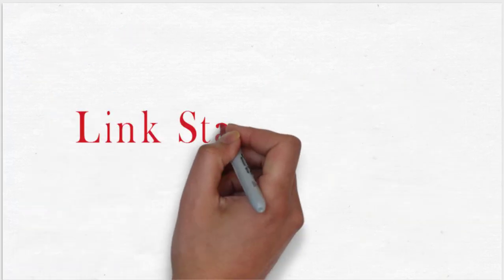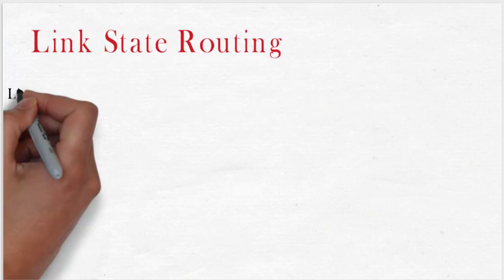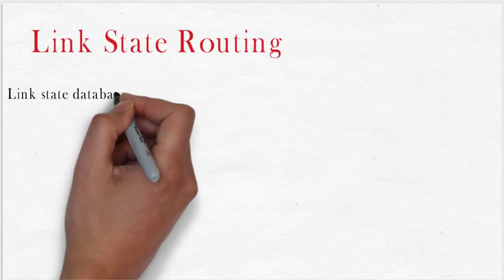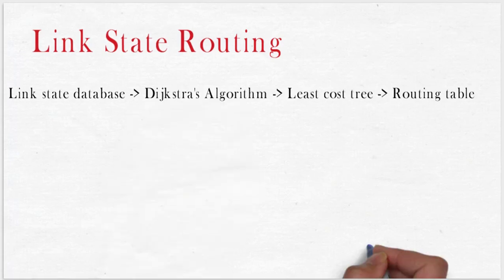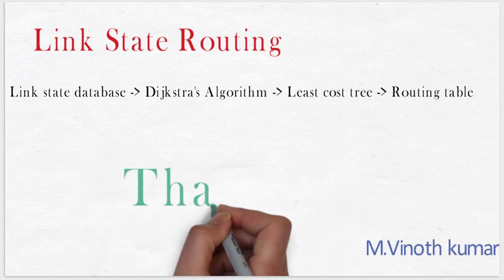So in link state routing, when each node is having the knowledge of total network topology, using Dijkstra's algorithm, a least cost tree can be made and the routing table can be prepared. Thank you.